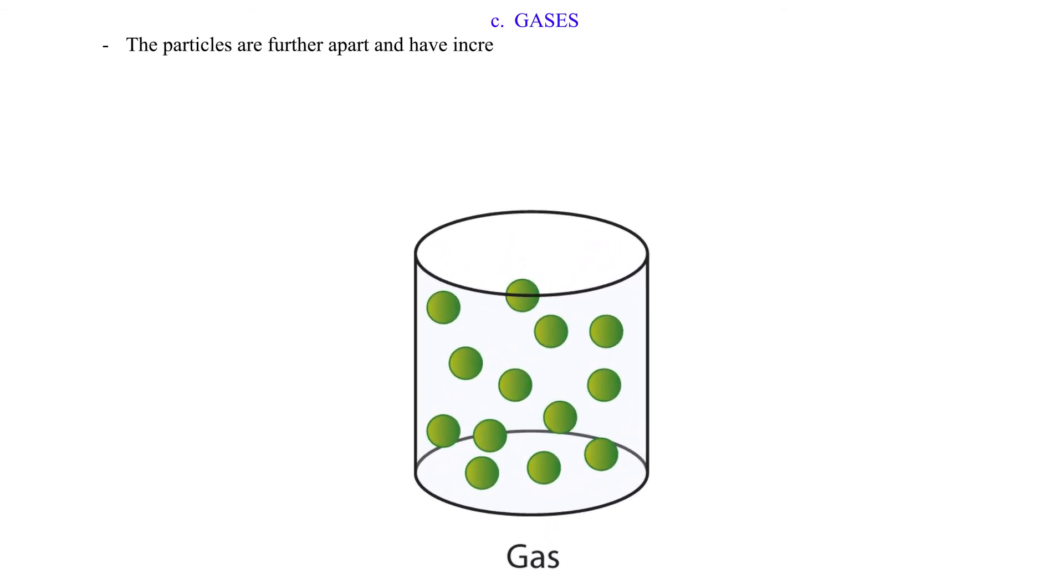C. Gases. The particles are further apart and have increased random motion compared to those in the liquid state.